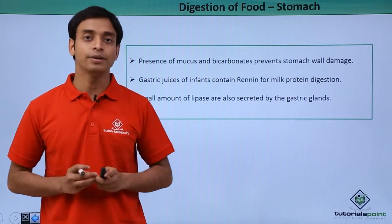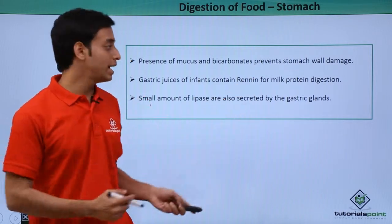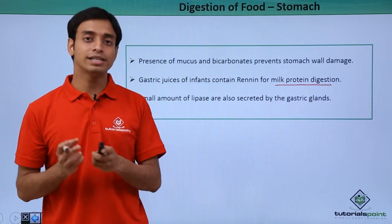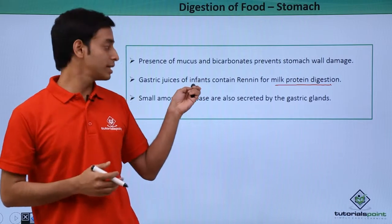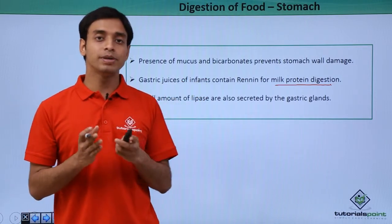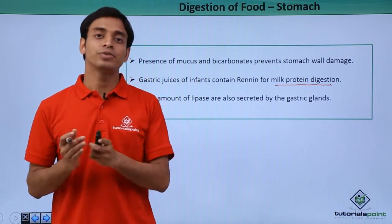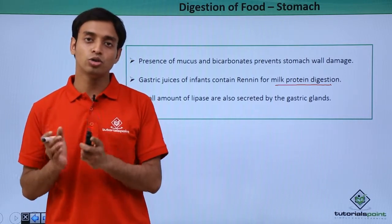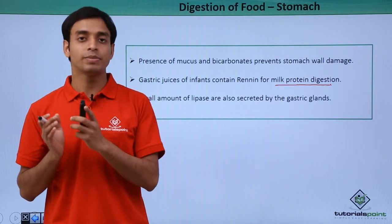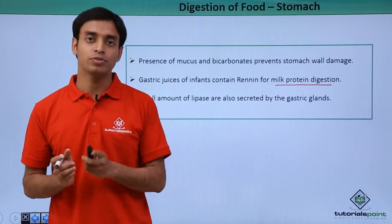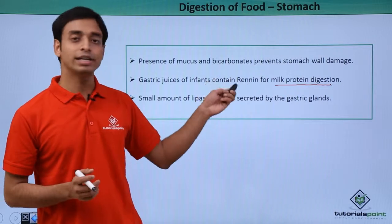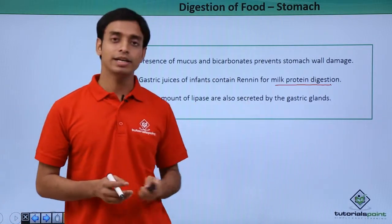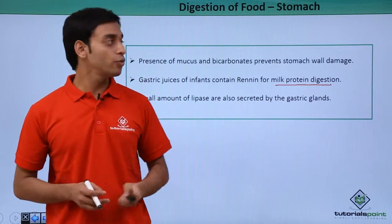The gastric juices of infants contain a substance called renin. This renin helps in the digestion of milk proteins, which are mostly digested by renin and are present mainly in infants. It is suggested that with age, milk proteins are not properly digested because of the absence of renin in the gastric juices of older individuals.